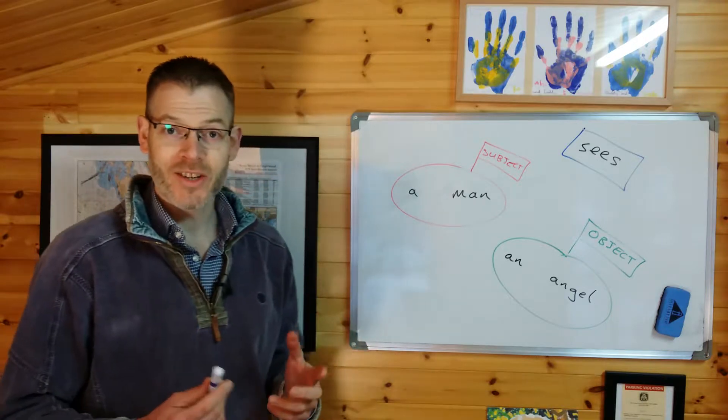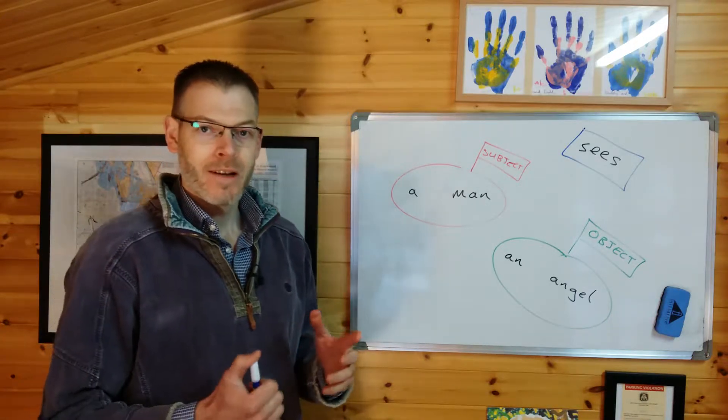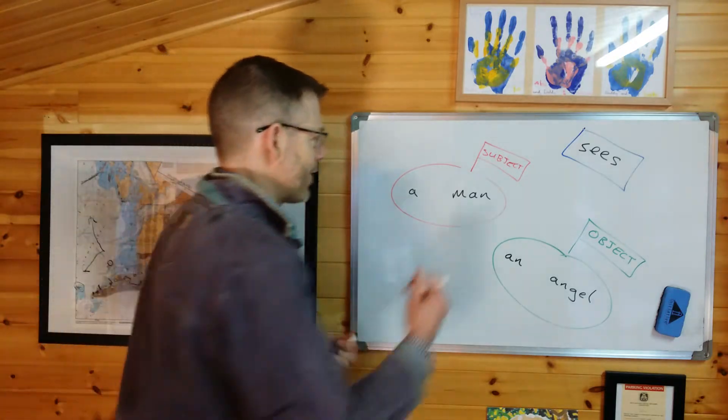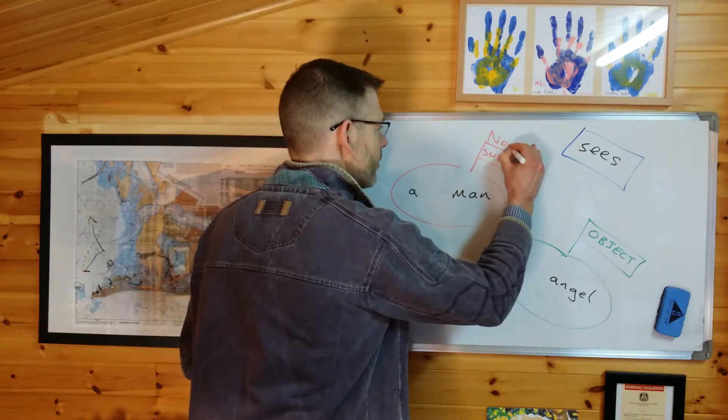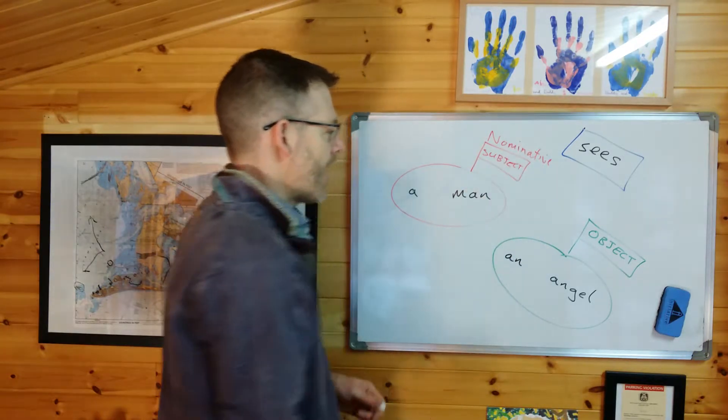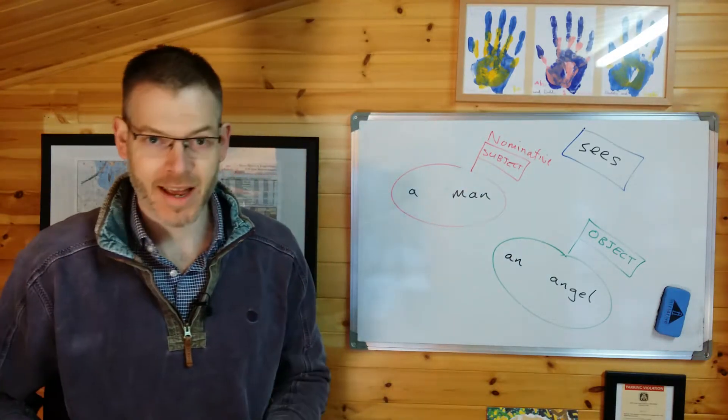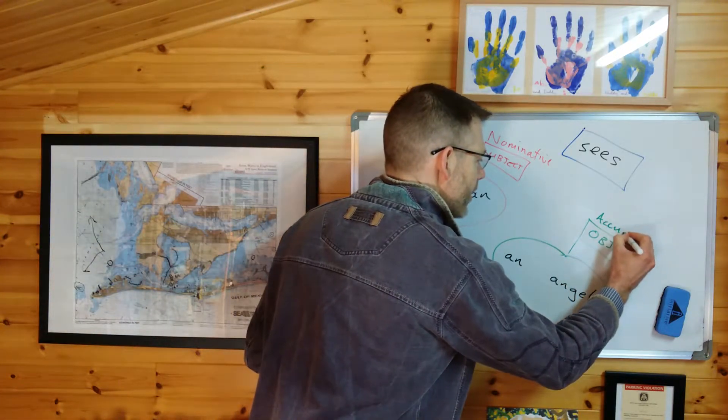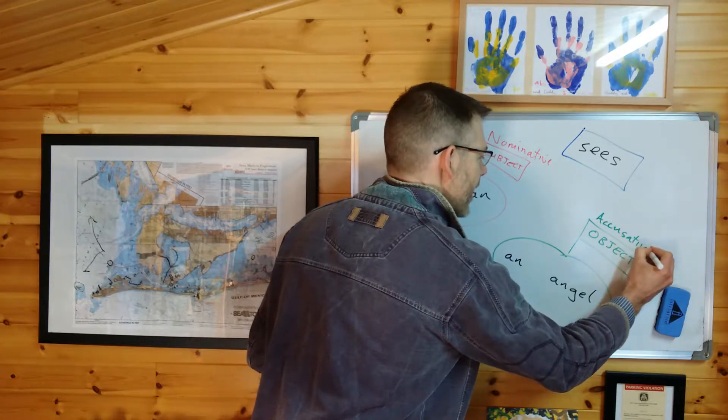And those labels are called cases. The noun which is the subject of the verb is said to be in the nominative case. And the noun which is the object of the verb is said to be in the accusative case.